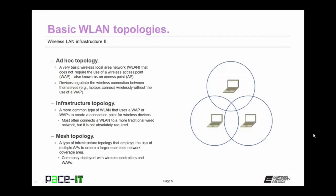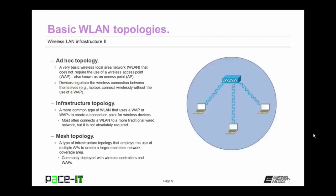An example of this is when laptops connect wirelessly without the use of a wireless access point. Then there's the infrastructure topology. It's a more common type of wireless local area network that uses a WAP or multiple WAPs to create a connection point for wireless devices. Most often it's used to connect a wireless network to a more traditional wired network, but that wired network is not absolutely required.